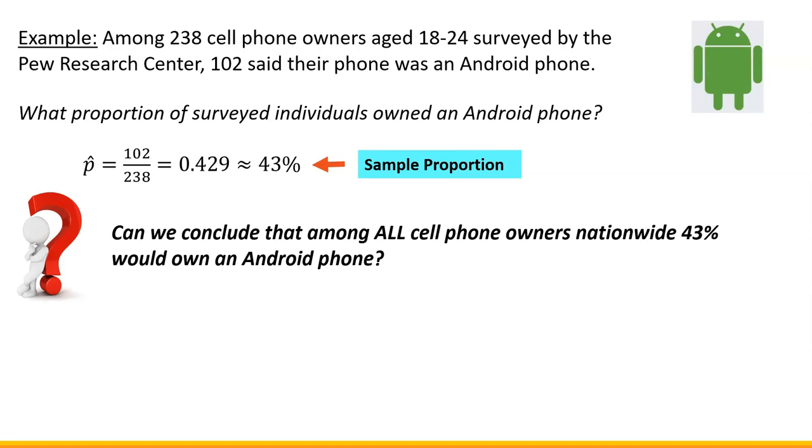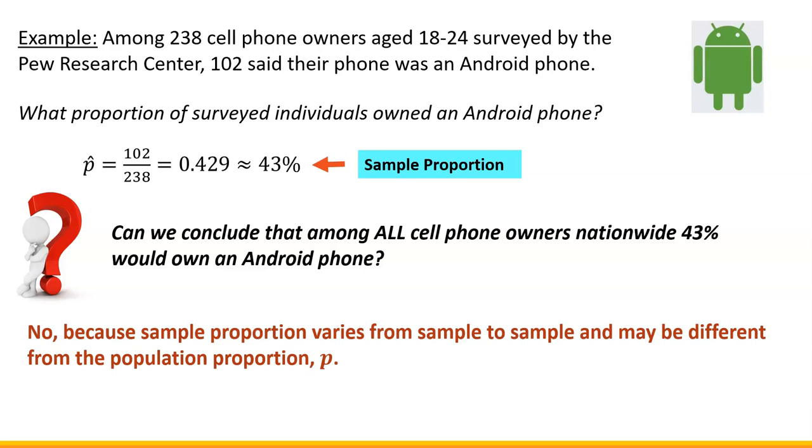But here's the question. Can we say that if in that sample 43% owned an Android phone then nationwide 43% would own an Android phone? Well no, we cannot because each sample proportion will be slightly different. Sample proportion will vary from sample to sample. It may be different from population proportion.